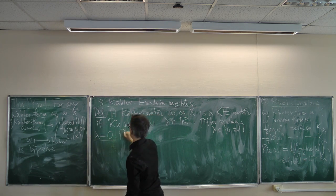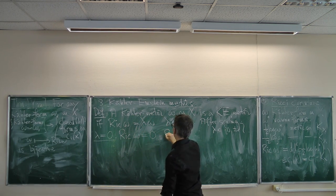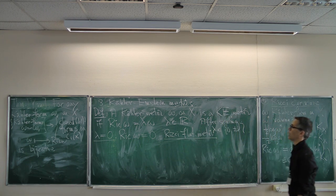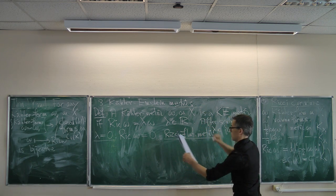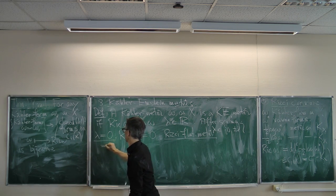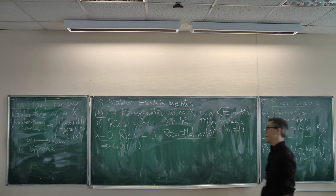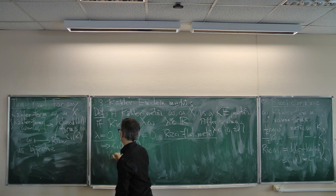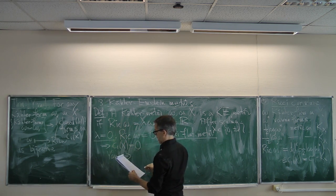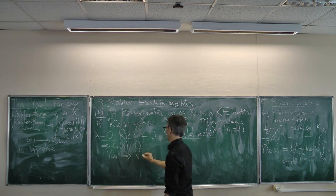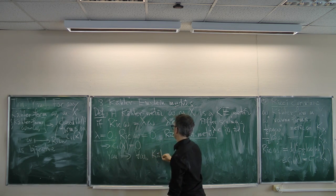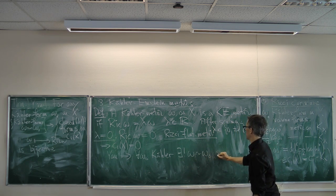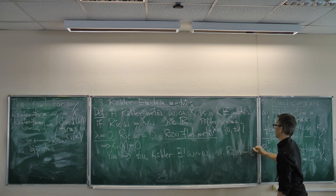Yau's theorem implies that this is only possible if c₁(X) = 0 — essentially the Calabi-Yau condition. In any case, Yau's theorem implies that for any Kähler class there exists a unique Ricci-flat representative: for every Kähler ω₀, there exists a unique ω cohomologous to ω₀ such that Ric(ω) = 0.